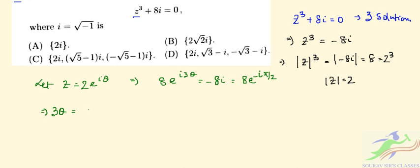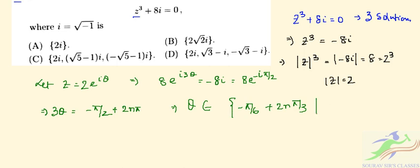From this, 3θ = -π/2 ± 2nπ, so θ belongs to the set { -π/6 + 2nπ/3 } for n = 0, 1, 2.